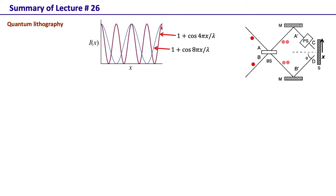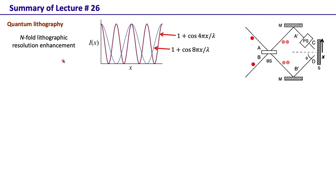So here we have a pattern that we can write if we have classical light of wavelength lambda, but this is the pattern we can write if we have a two-photon entangled state with each photon at wavelength lambda. With the same wavelength but a two-photon state, one can write on the substrate a pattern which is twice as dense. If one has an n-photon entangled state then that would provide an n-fold lithographic resolution enhancement. That is a very useful application of such a quantum state.